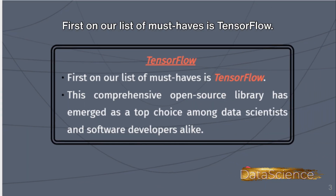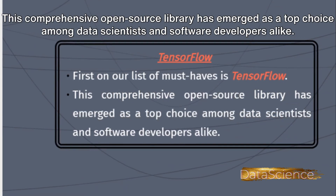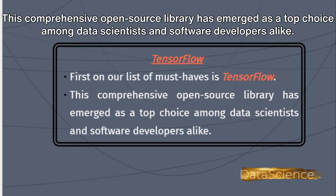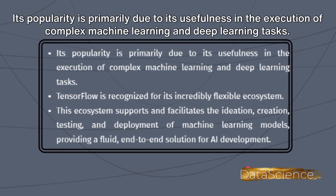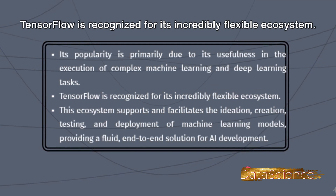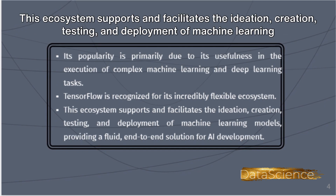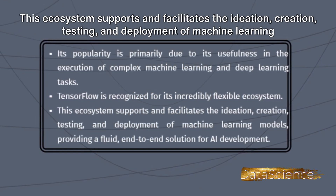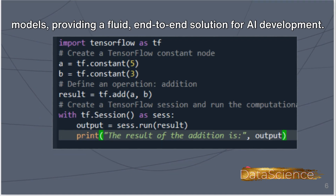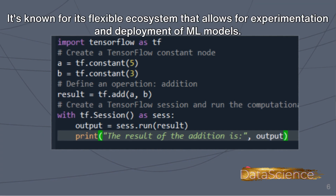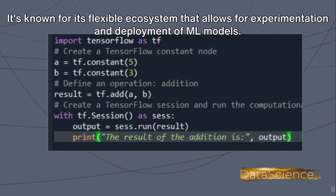First on our list of must-haves is TensorFlow. This comprehensive open-source library has emerged as a top choice among data scientists and software developers alike. Its popularity is primarily due to its usefulness in executing complex machine learning and deep learning tasks. TensorFlow is recognized for its incredibly flexible ecosystem, which supports the ideation, creation, testing, and deployment of machine learning models, providing a fluid end-to-end solution for AI development.